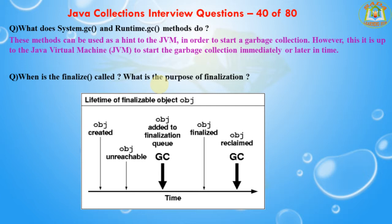The next question is: when is the finalize method called and what is the purpose of finalization? The finalize method is called by the garbage collector just before releasing the object's memory. It is normally advised to release the resources held by the object inside the finalize method.